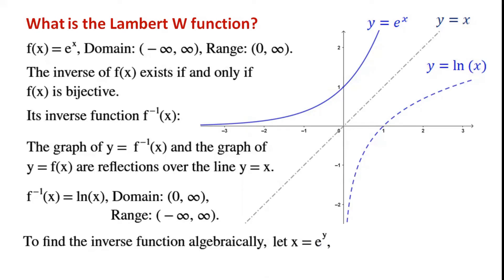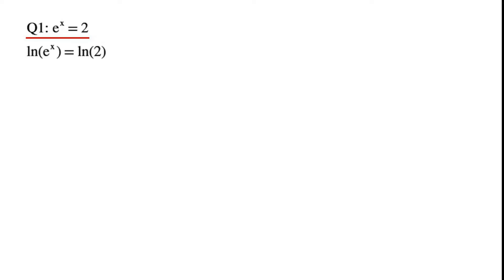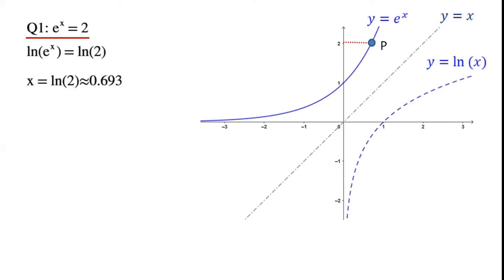To find the inverse function algebraically, we write y in place of x and x in place of y. So we let x equal e to the power of y, then take ln on both sides. After simplifying, we have ln(x) equals y. For example, solving e^x equals 2: we take ln on both sides. ln(e^x) equals x times ln(e), and since ln(e) equals 1, the left-hand side equals x. The right-hand side is approximately equal to 0.693.